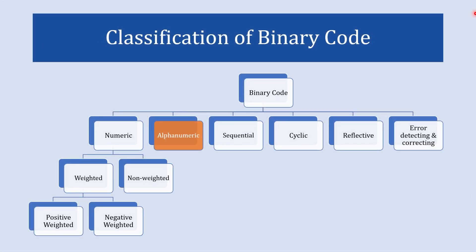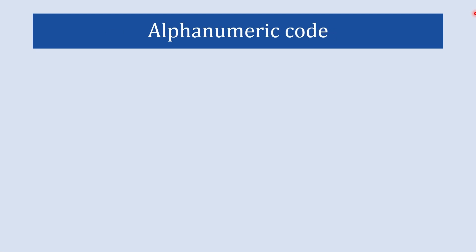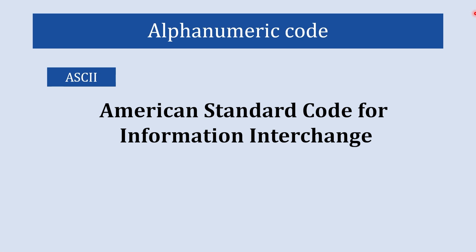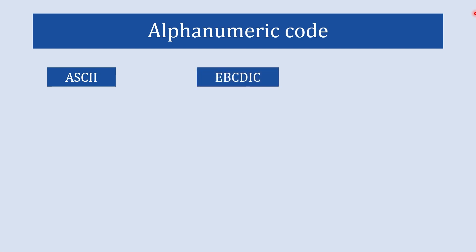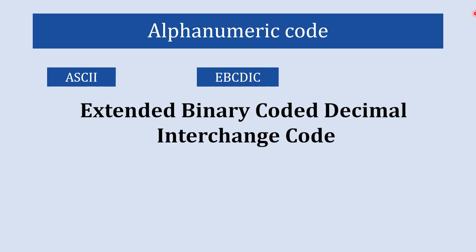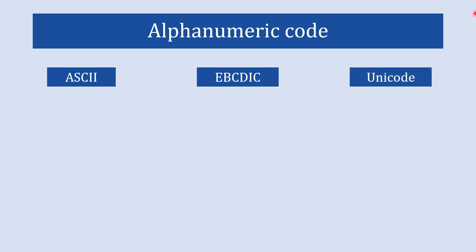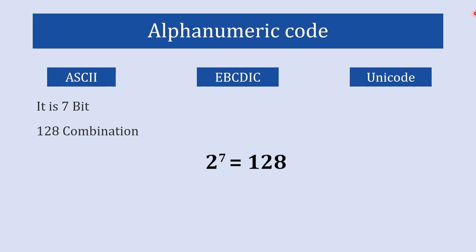Now we are going to understand the alphanumeric code. In computing, alphanumeric codes are used to represent characters, symbols, and numbers. Famous examples include ASCII — American Standard Code for Information Interchange — which is a 7-bit coding system allowing 128 possible combinations for any character, number, punctuation mark, or control character. For example, capital M in ASCII is 1001101, as M is the 77th character and 77 equals 1001101 in binary.